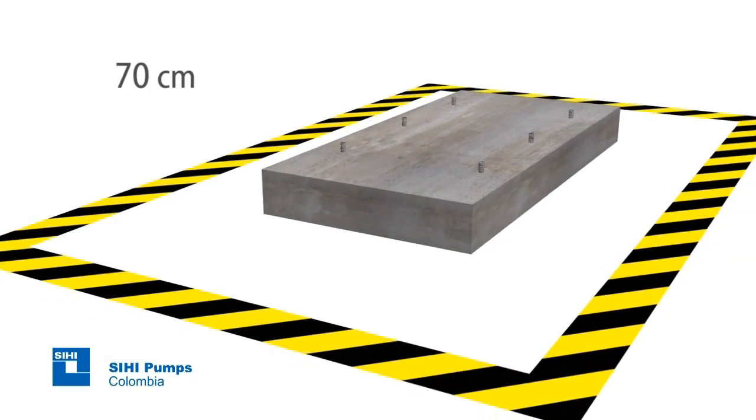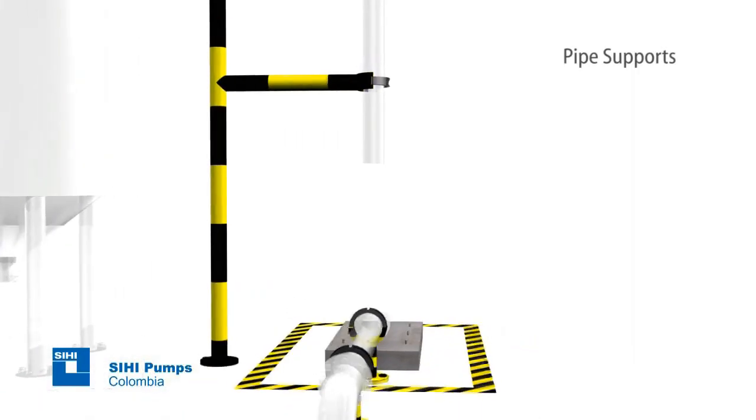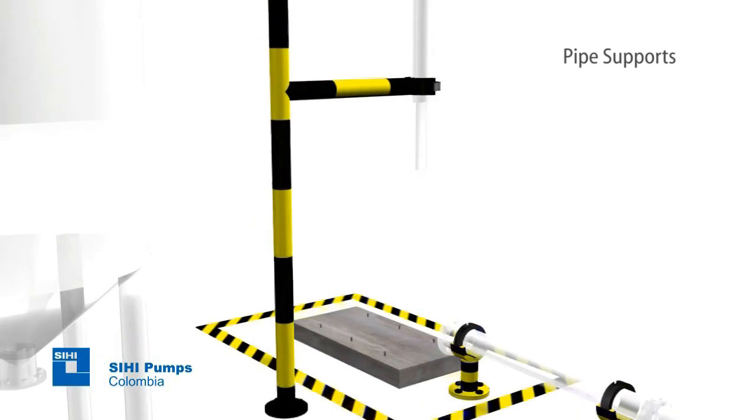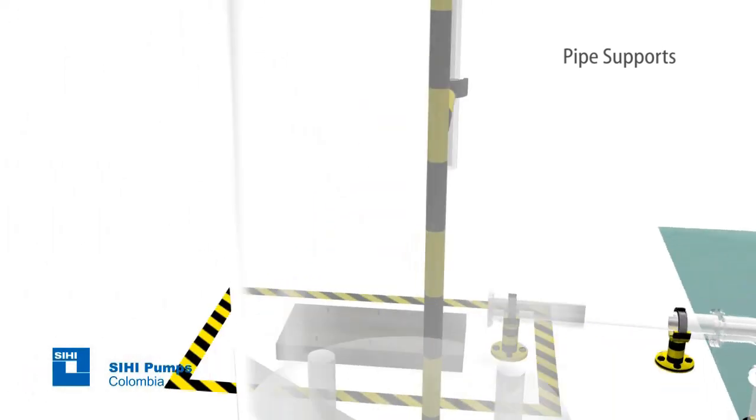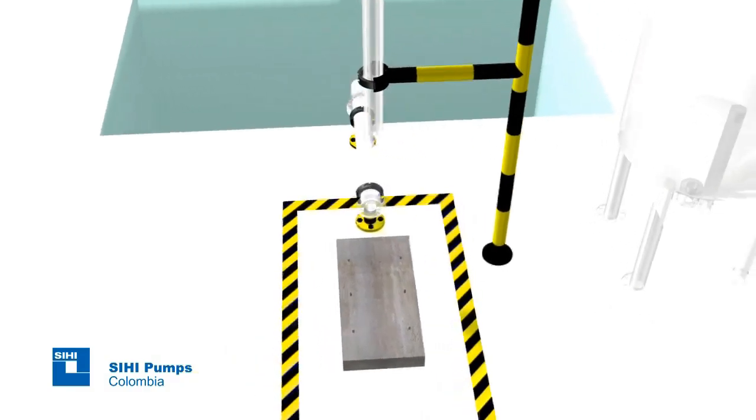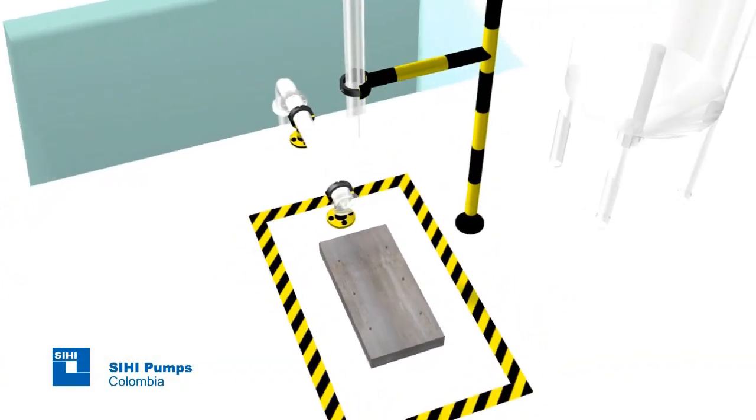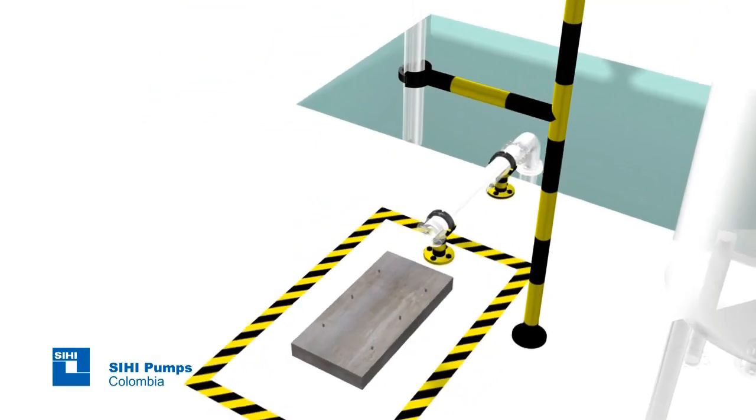If possible, you should have at least 70 cm on each side of the foundation. Likewise, the appropriate structures must be planned to withstand suction and discharge pipes since these should not be supported on the pump flanges to prevent fractures and misalignments of the motor pump set.